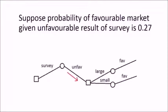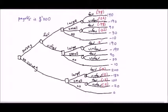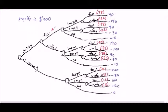Note that probability of unfavorable market is 1 minus 0.78, or 0.22. Suppose probability of favorable market given unfavorable result of survey is 0.27. We follow the branch conduct survey and choose unfavorable result, then continue along the branch until we get favorable market. Write down the probability of favorable market is 0.27. Note that probability of unfavorable market is 1 minus 0.27, or 0.73. Suppose probability of favorable result of survey is 0.45. Therefore, probability of unfavorable result is 0.55.